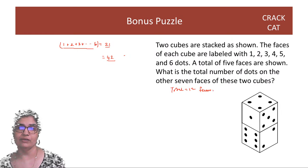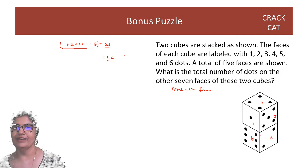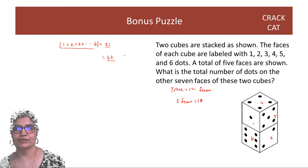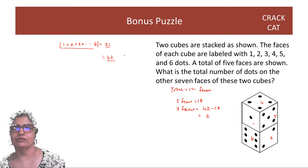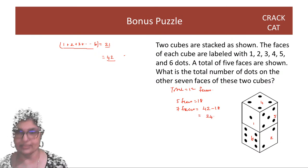Out of these 12 faces, 5 are visible to us: 4, 1, 5, 2, and 6. Adding these gives 18. So out of the 12 faces, 5 faces add up to 18. The remaining 7 faces must be 42 minus 18, which is 24. So that's our answer: 24.